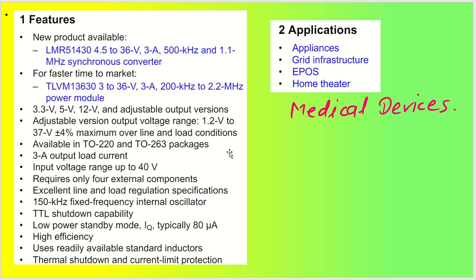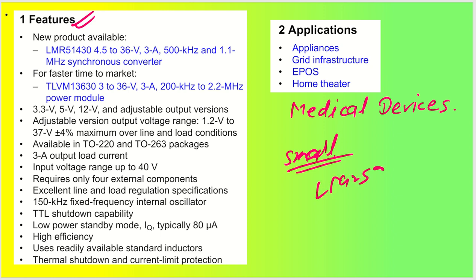Looking at the features — these days a lot of miniaturization is happening with smaller packages, so this particular IC is not preferred if you have a space constraint. But if you need a sturdy solution, LM2596 is one of the best choices. These days newer products are available with similar configurations, such as LMR51430, and if you want to get to market quickly, you can go with TLV M13630.